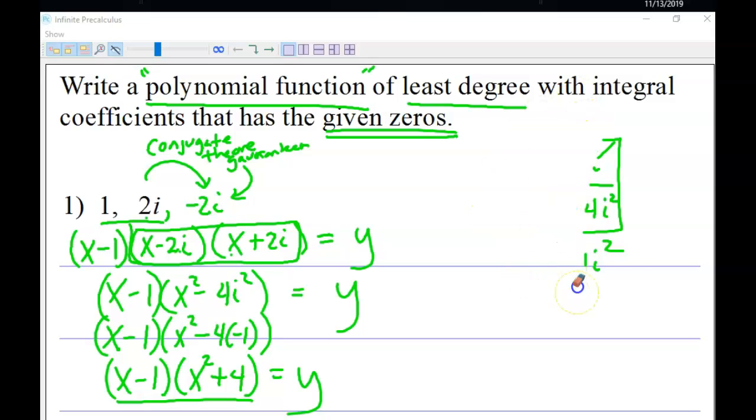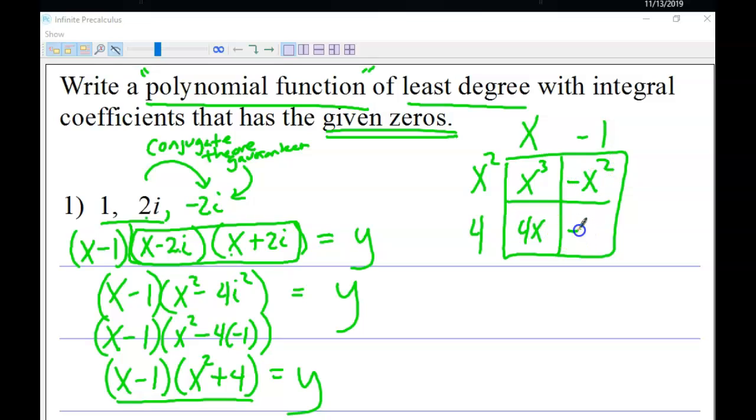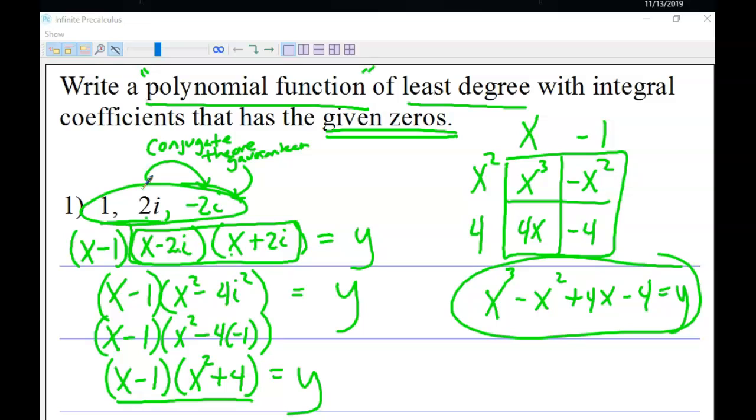And then we're going to do another box to multiply those together. (x - 1)(x² + 4). And then putting it in descending order, we have x³ - x² + 4x - 4, and there's my polynomial. So that polynomial would have these three roots. So let's review the steps here. Step 1 was we found the conjugate pair. Step 2, we want to write those roots as factors using the factor theorem. Step 3, multiply it all together, and you've got your answer.